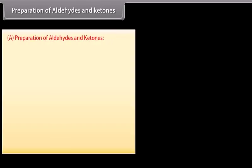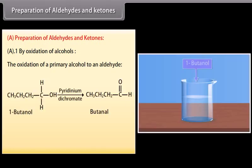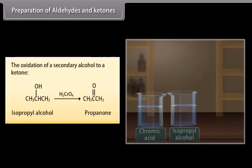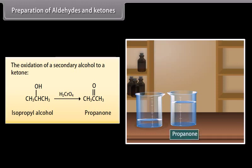Preparation of aldehydes and ketones — By oxidation of alcohols. Butanol is oxidized in the presence of pyridinium dichromate to form butanal. A mild oxidizing agent must be used in the oxidation of a primary alcohol to an aldehyde; otherwise, the aldehyde will be further oxidized to a carboxylic acid. For the oxidation of a secondary alcohol to a ketone, adding chromic acid to isopropyl alcohol forms propanone.